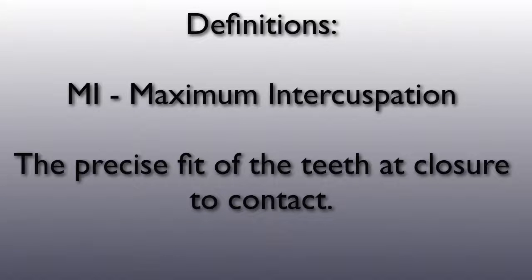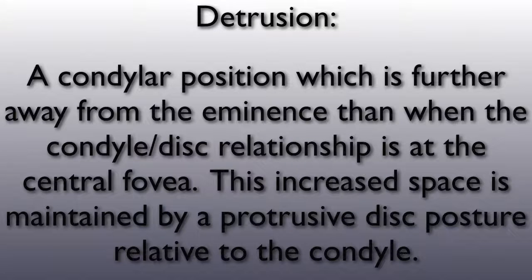Two definitions are required for this presentation. MI, or maximum intercuspation, is the precise fit of the teeth at closure to contact. Detrusion is a condylar position which is further away from the eminence than when the condyle-disc relationship is at the central fovea.